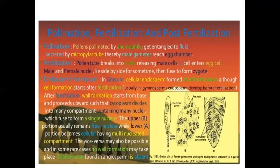Pollination, fertilization, and post-fertilization: pollen pollinated by anemophily get entangled in fluid secreted by the micropylar tube, thereby male gametes reach the egg chamber. Fertilization: the pollen tube breaks into the ovule, releasing male cells. One cell enters the egg cell; male and female nuclei lie side by side for some time, then fuse to form a zygote. Endosperm formation: in Natum, cellular endosperm is formed after fertilization. Although cell formation starts after fertilization, usually in gymnosperms endosperm develops before fertilization. After fertilization, wall formation starts from the base and proceeds upward, such that cytoplasm divides into many compartments containing many nuclei, which fuse to form a single nucleus.